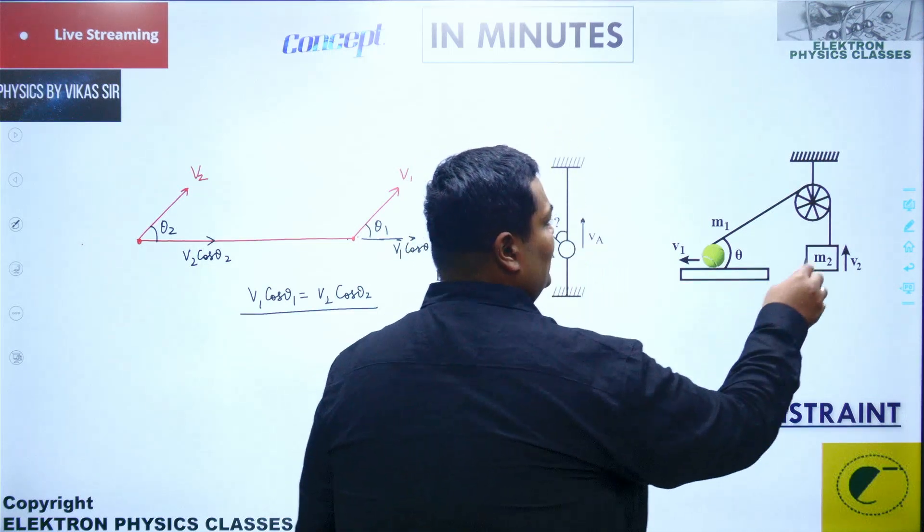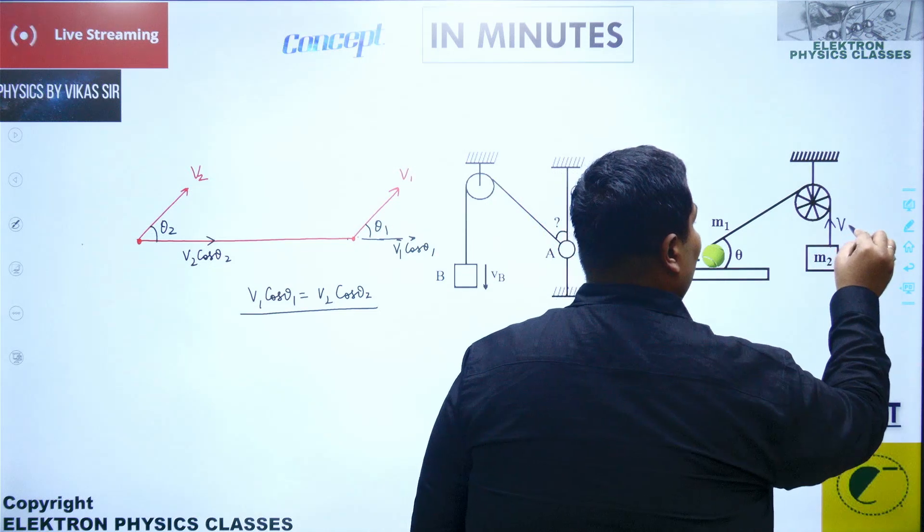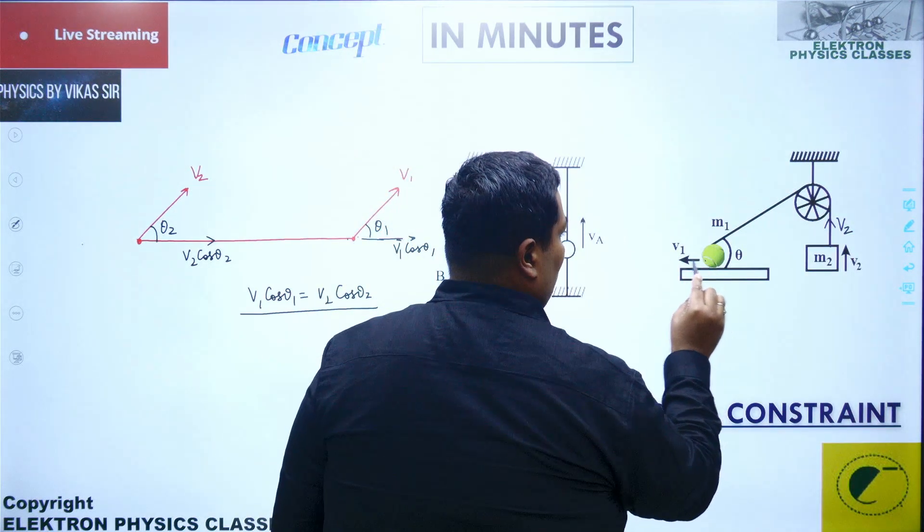first example in which this particular block is moving up, so its velocity is given along the string, so it need not be resolved. It is already along the string. Why? If you check the velocity of this particular ball, which is v1, this is not along the string.